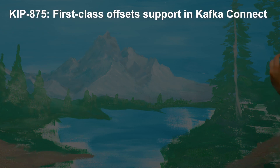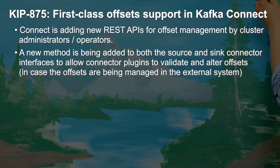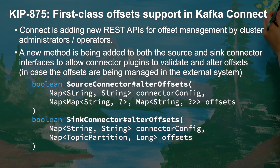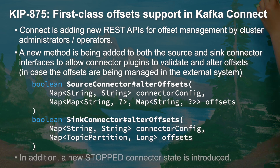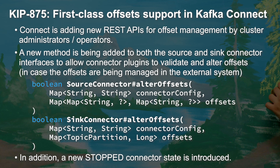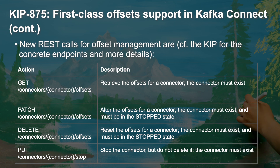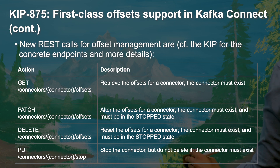Moving on, KIP 875 offers first-class support for offsets in Kafka Connect. With the current implementation of this KIP, Connect cluster administrators can read offsets for both source and sink connectors. In the future, as part of Apache Kafka 3.6, administrators will also have the ability to alter and reset connector offsets. Also in this release, KIP 875 adds a new STOP state for connectors, which allows users to shut down connectors and maintain connector configurations without utilizing resources.